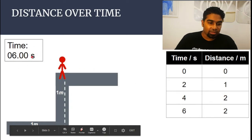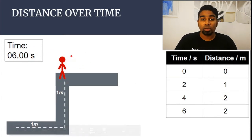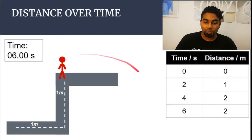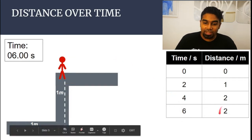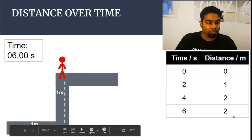Then at six seconds, Mr. Red stayed at the same spot — he didn't move at all. So we record six seconds: the total distance that he moved is still two meters. He hasn't moved from the spot.